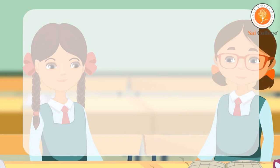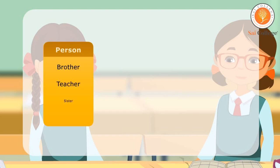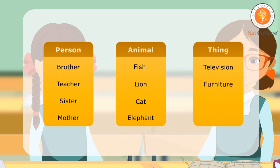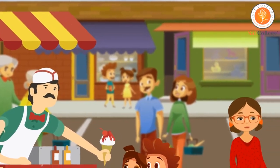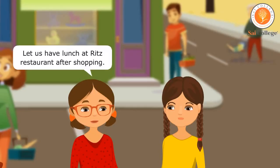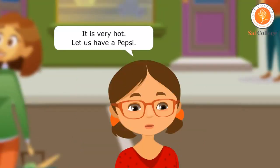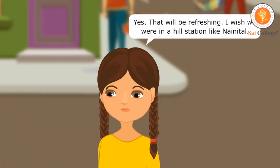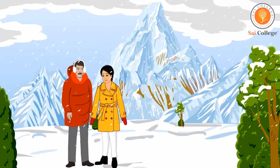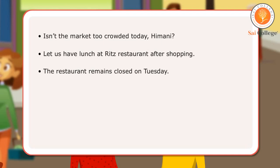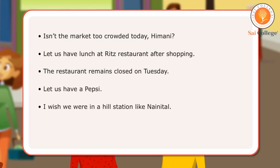Here is a list of some common nouns. Proper Nouns: Isn't the market too crowded today, Himani? Yes, it is. Let us have lunch at Ritz restaurant after shopping. The restaurant remains closed on Tuesday. It is very hot. Let us have a Pepsi. Yes, that will be refreshing. I wish we were in a hill station like Nainital. Just what I was thinking. I hate the month of June. In the conversation, the friends have used proper nouns referring to a particular place, person, brand, month and day of the week.